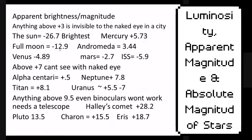The full moon is negative 12.9 — that's pretty bright because the moon is really close to us. If the moon was where Venus was, it would not be anywhere near that number. Mars is negative 2.7. The International Space Station is even closer to us — only about 100,000 meters above us — so it's really, really bright because it's really, really close.